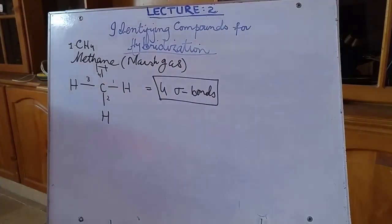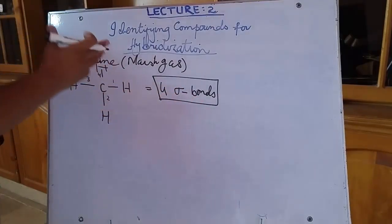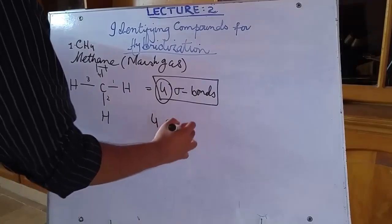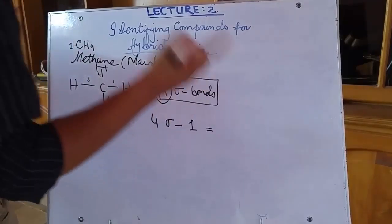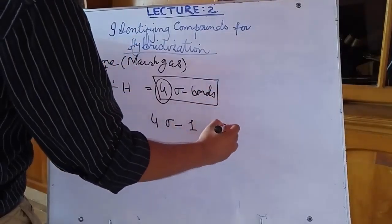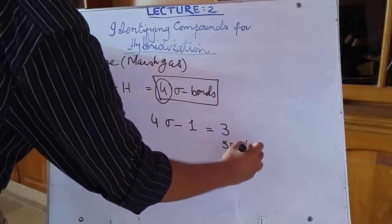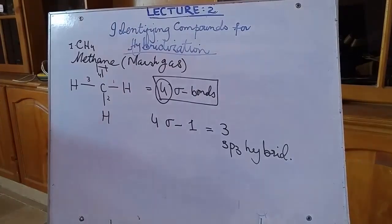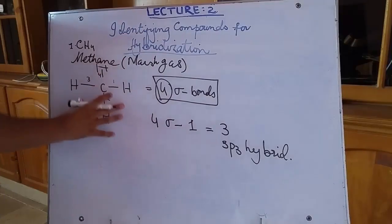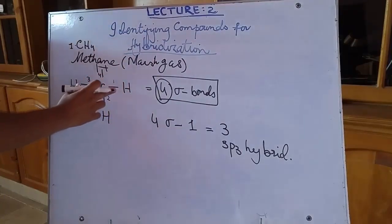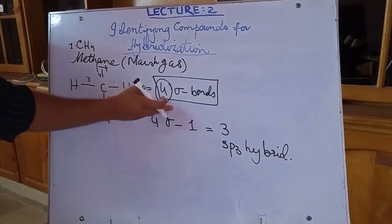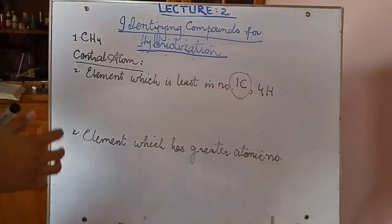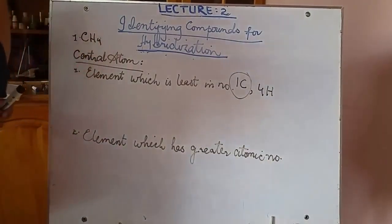Now, how can we identify the type of hybridization from the number of sigma bonds? Simply subtract 1 from the number of sigma bonds. If we have four sigma bonds, four minus one gives us three — meaning we have sp3 hybridization in methane. Just review: count the number of single covalent bonds, then one less than that number gives you the type of hybridization occurring in the compound.